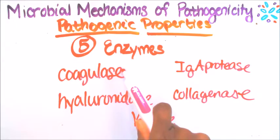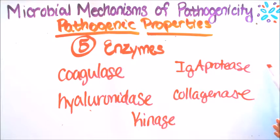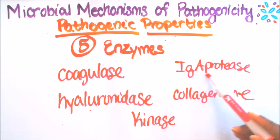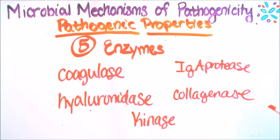Coagulase turns fibrinogen — a plasma protein in blood — into fibrin. Fibrin are threads that form blood clots. Hyaluronidase hydrolyzes hyaluronic acid; these enzymes cause gas gangrene. IgA protease: when the body produces IgA antibodies, the pathogen produces IgA proteases that destroy IgA. Collagenase breaks down the protein collagen, which forms connective tissue of the muscles. Lastly, kinase breaks down fibrin and stops blood clotting.